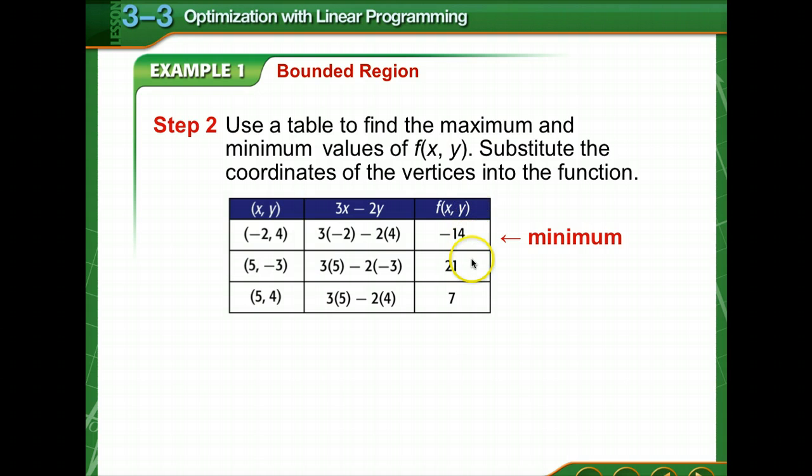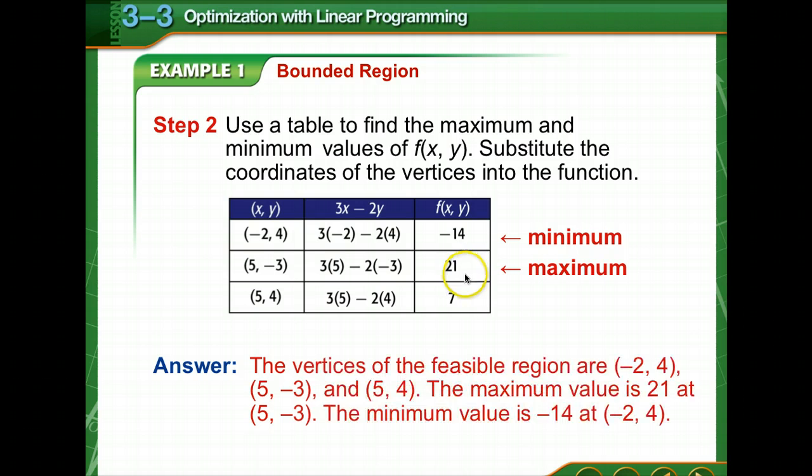Notice negative 14 is the smallest number. The largest number is 21. So we have a minimum of negative 14, which is at negative 2, 4. And the maximum value is 21, and that's at the vertices 5, 3.